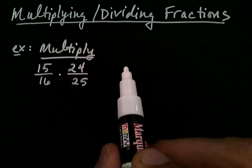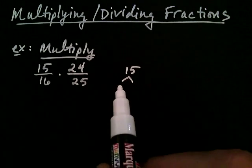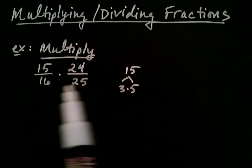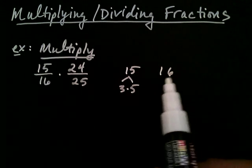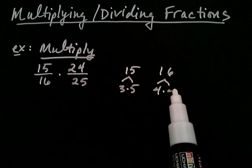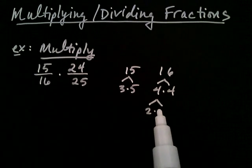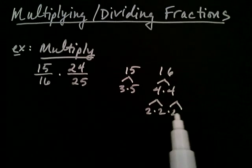So 15, I can see, is just three times five. And now with the 16, the 16 is just four times four, but then the fours are not prime, so the fours become two times two and two times two.